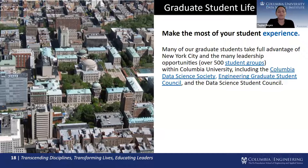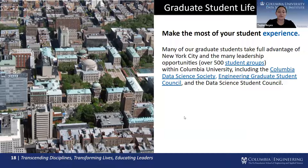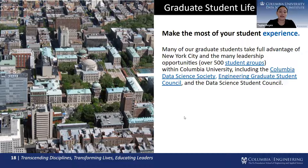For graduate student life: many of our graduate students take full advantage of New York City and leadership opportunities within Columbia University. With over 500 student groups and organizations — including the Columbia Data Science Society, Engineering Graduate Student Council, and our very own Data Science Student Council — we encourage you to get involved. The Columbia Data Science Society hosts a yearly hackathon each fall, along with workshops, seminars, and employer visits. Our Data Science Student Council advocates on behalf of MS students and hosts social events throughout the academic year.